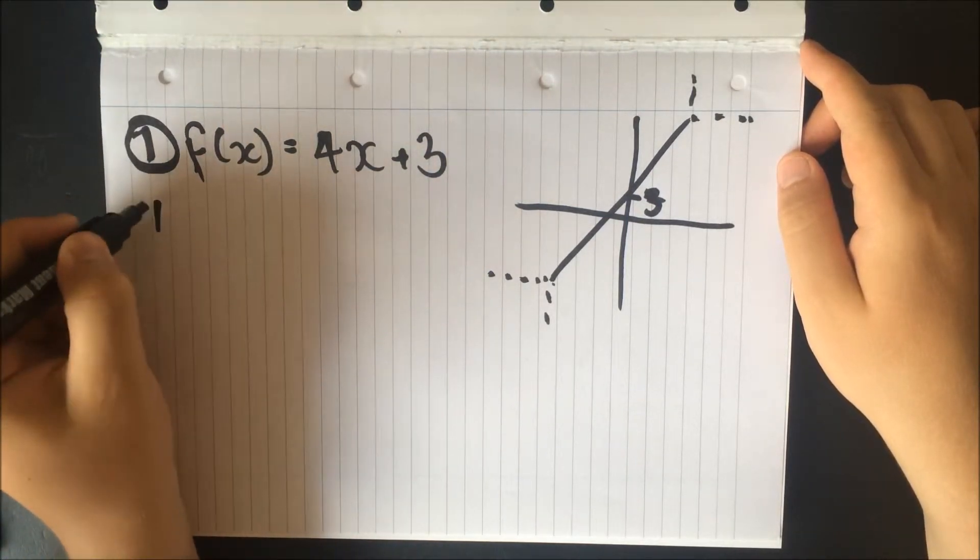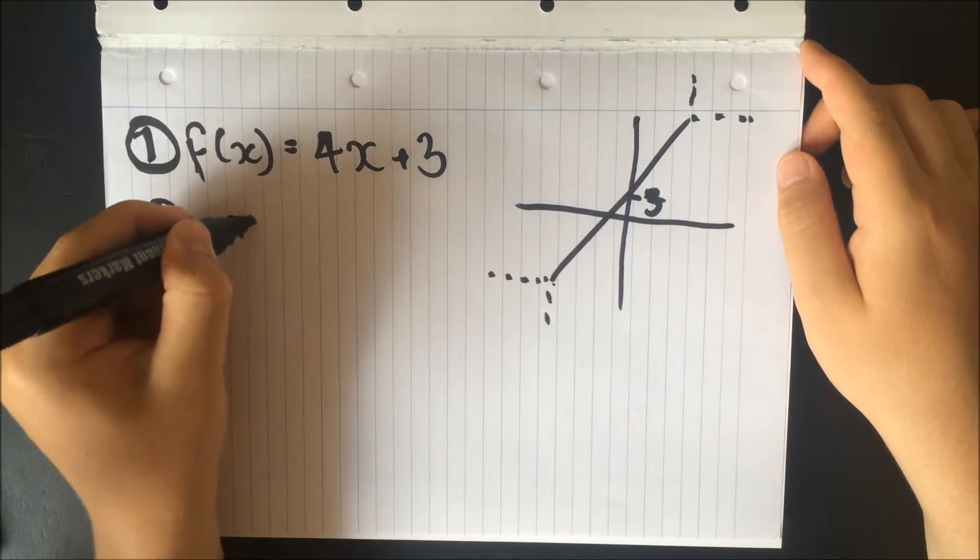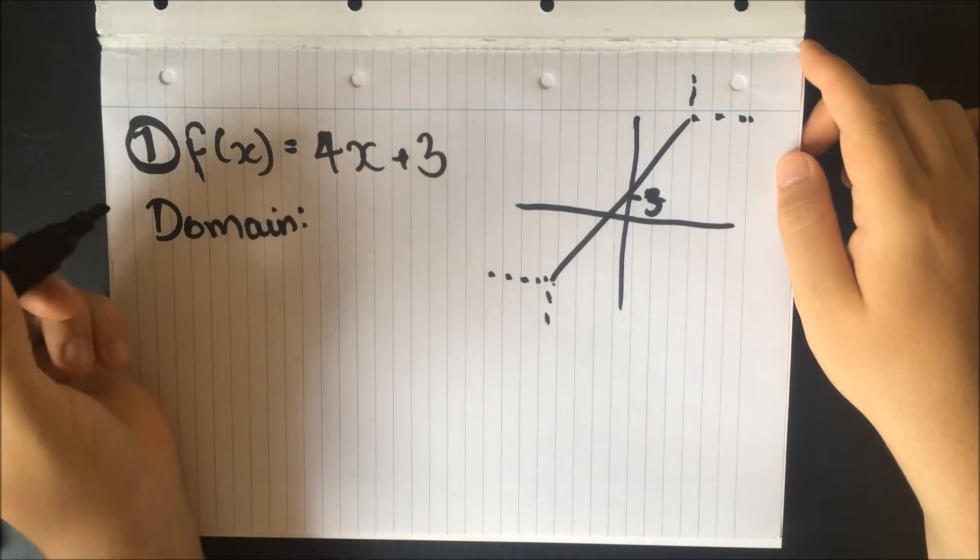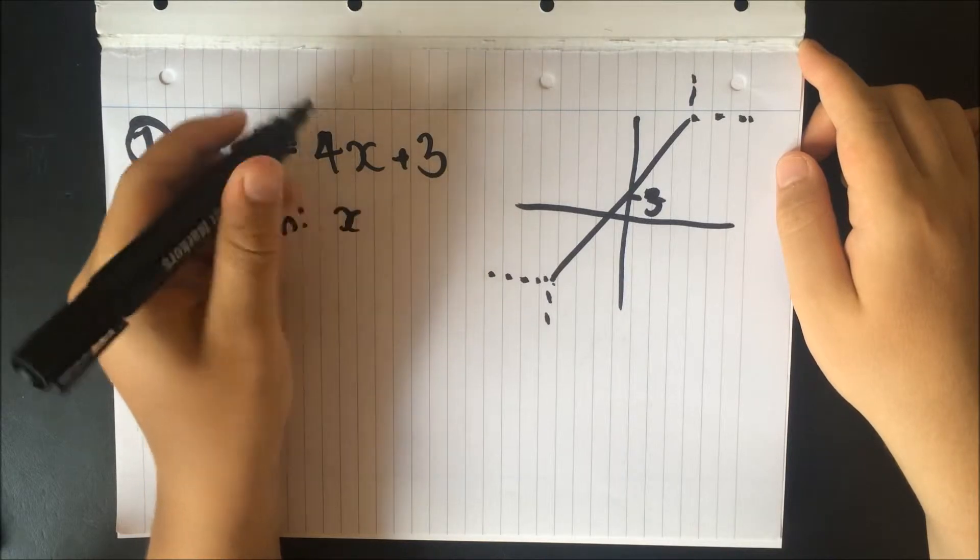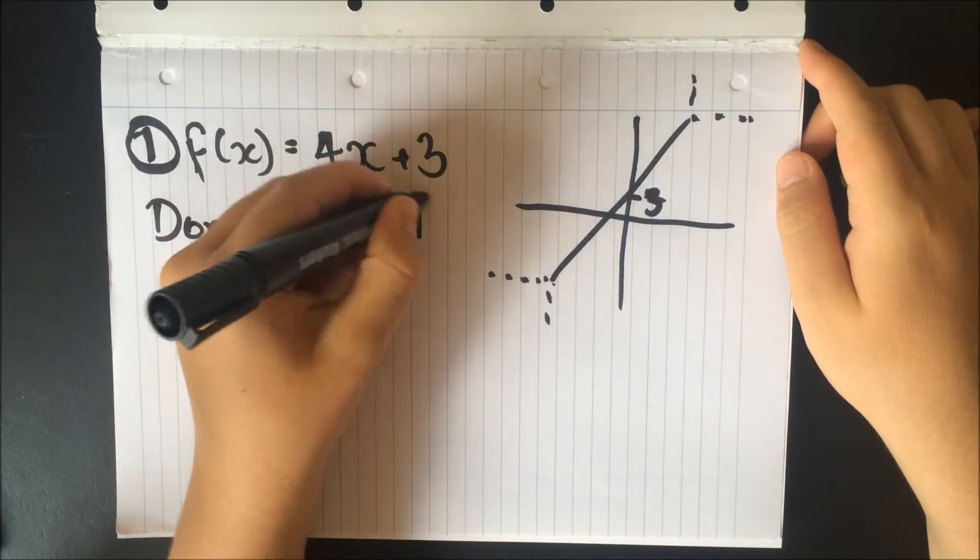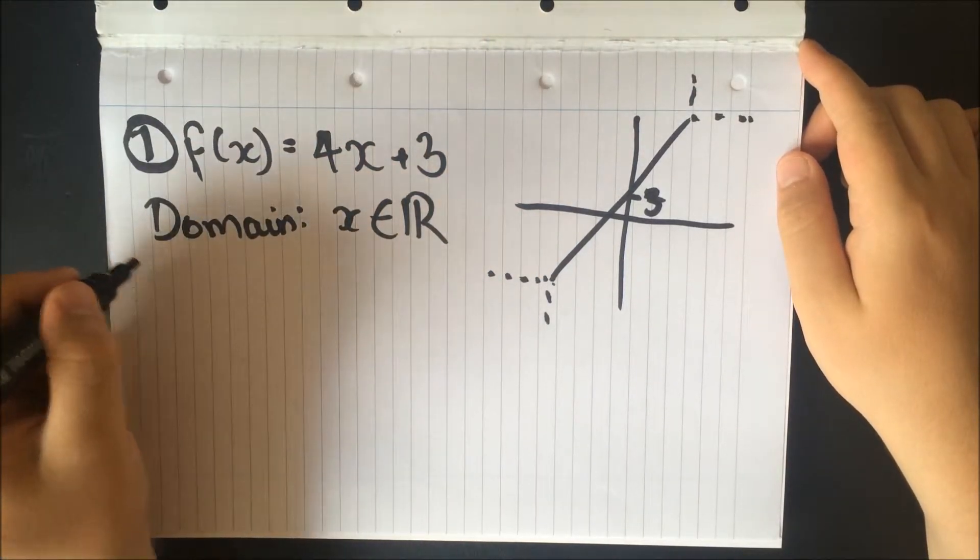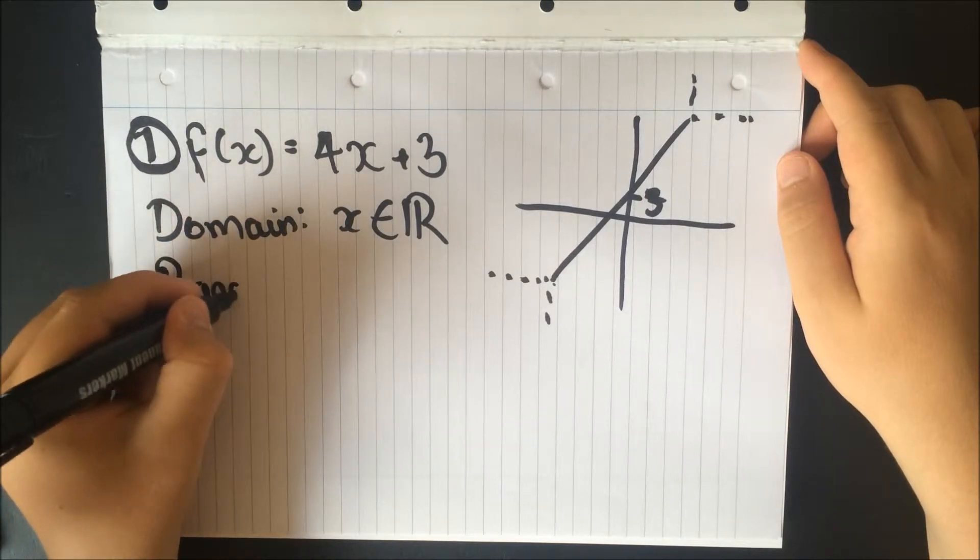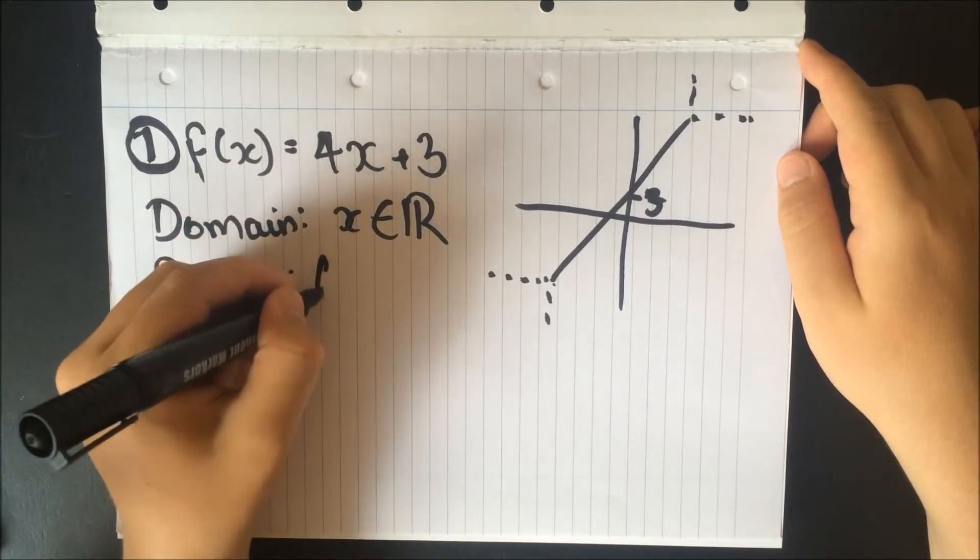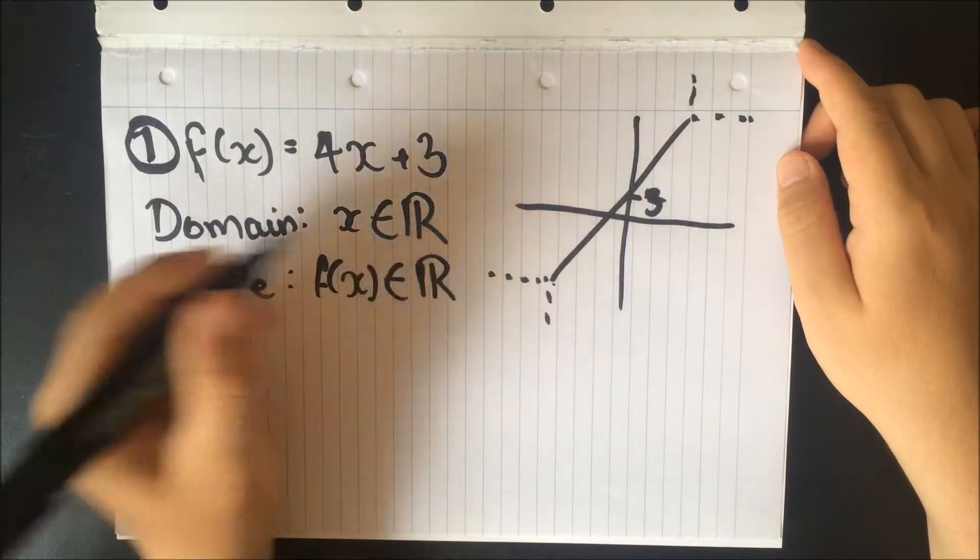So therefore, our domain, let's write domain, what's that? Well, x can take any value, so any real number. And the range is just the same. We'll put f(x) there, and a subset of the real numbers.